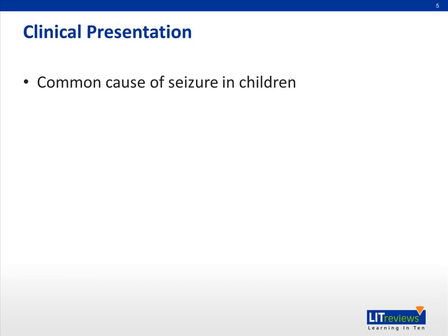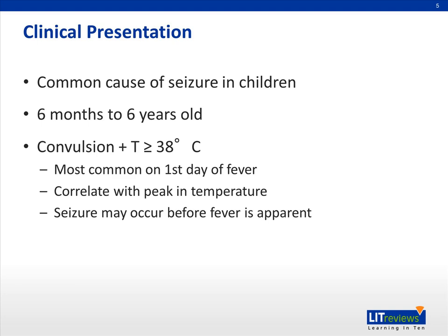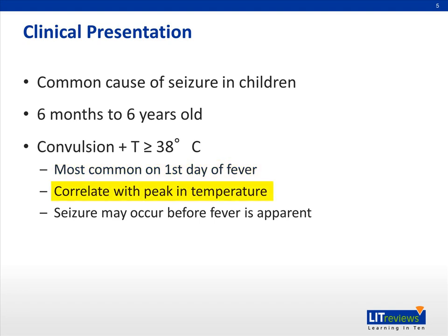Febrile seizures are a common cause of seizures in children. Febrile seizures tend to occur between the ages of six months to six years, with 50% of cases presenting between 12 to 30 months. It is defined as the presence of convulsions with a temperature of over 38 degrees Celsius in a young child presenting within the appropriate age group. Seizures tend to occur on the first day of the fever and correlate more with the peak temperature than with the speed of temperature rise.